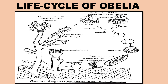Today, we have learnt in detail about the characteristic features of Obelia and its life cycle, consisting of the polyp colony representing the asexual stage and the medusa representing the sexual stage.